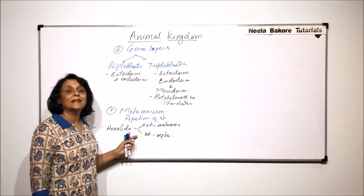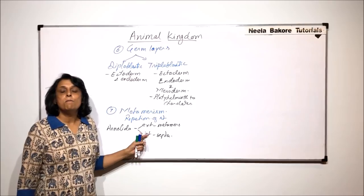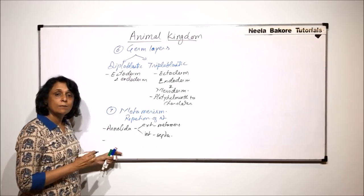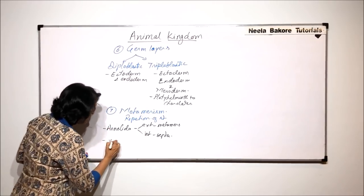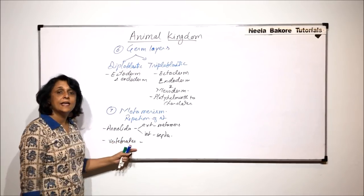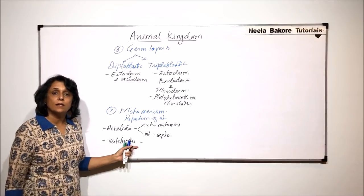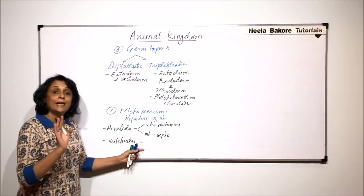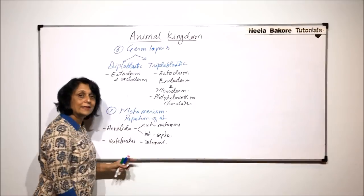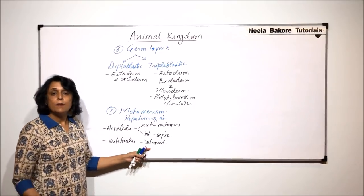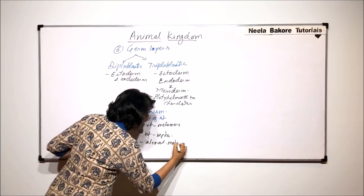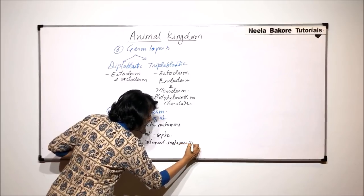External segmentation corresponds to the internal, so we call annelids metameirically segmented. In the case of vertebrates, there is only internal repetition — that means metamerism is only internal.